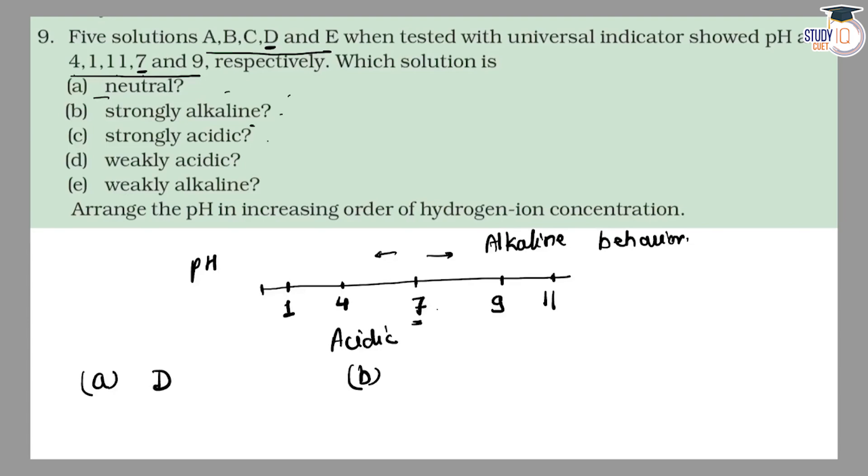9 and 11. 4 is A, 1 is B, 11 is C, 7 is D and 9 is E.